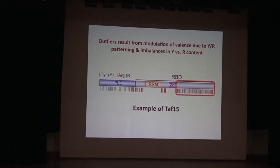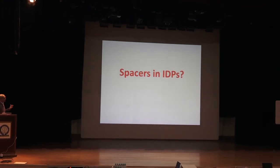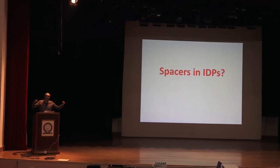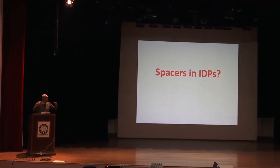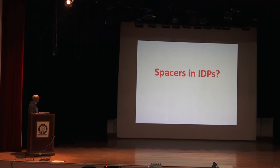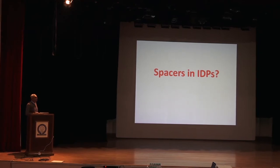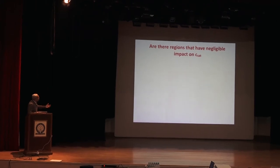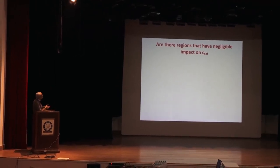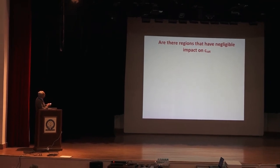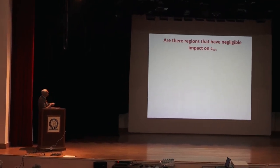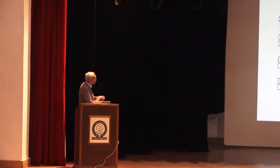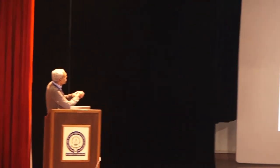One has to take into account the modulation of effective valence due to either patterning or imbalances between arginine and tyrosine contents. The other question is: what role do the other residues play? These would be spacers, and many of these sequences have large numbers of glycines in them. We're just starting to make sense of these spacers. The way you'd want to think about spacers is that they'd have a negligible impact on the saturation concentration but possibly an important impact on material properties.